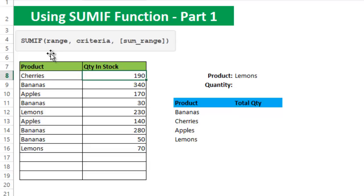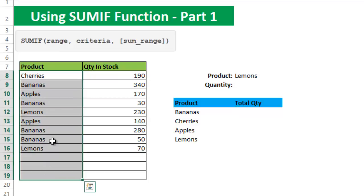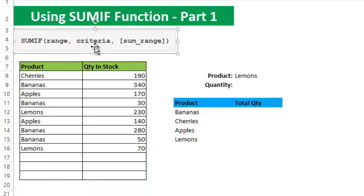There are three arguments in the SUMIF function formula. The first argument is range — the range of cells to be evaluated by your criteria. For example, B8 to B19 is the range because we want to apply our criteria to that range. The second argument is criteria — the condition that must be met. The criteria may be supplied in the form of a number, text, date, logical expression, a cell reference, or another Excel function.